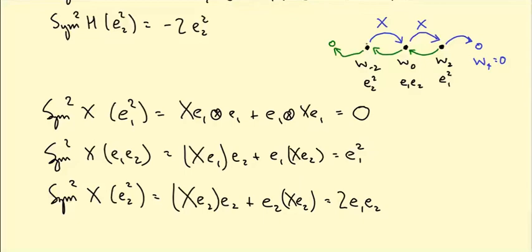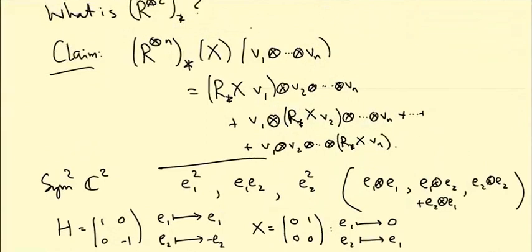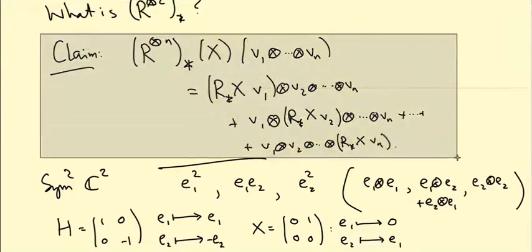Y moves things to the left — I'll leave computing Sym2(Y) as an exercise. Eventually you fall off the end and get zero. And H, as we saw, preserves each weight space: it acts as 2 on W2, as 0 on W0, and as -2 on W_{-2}. That's just an example of the weight space structure in practice.